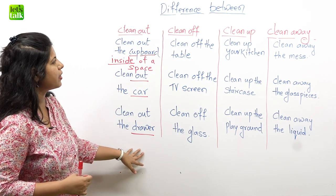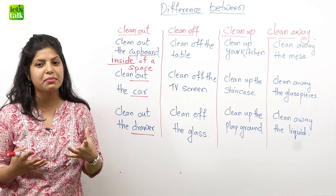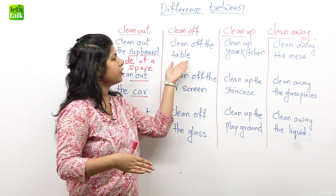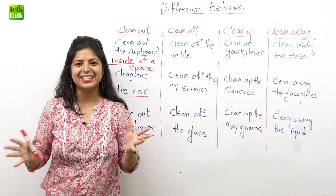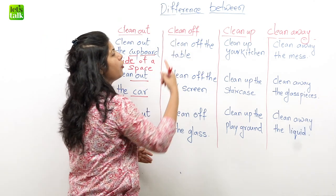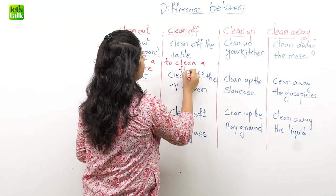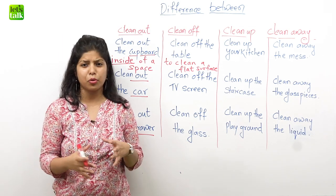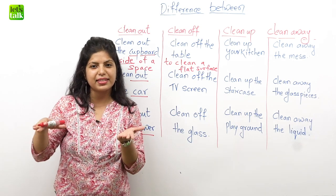Now the next one is very nice and interesting: clean off. When you put clean and off together, clean off means to clean something that is flat — a flat surface. For example, to clean off a table. No matter how fancy your table is, it's going to have a flat surface. So when you want to clean something that's flat, you will say: I need to clean off the table. It means to clean a flat surface. You're cleaning your house and you can say: I'm going to clean off the table — it's a flat surface and I'm going to clean it off.